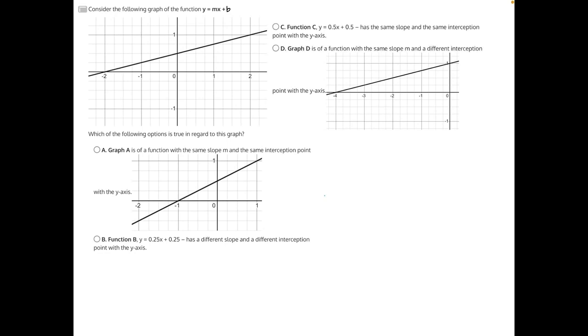Consider the following graph of the function y equals mx plus b. Which of the following options is true in regard to this graph? To solve this question, let's go ahead and find the slope of our original function. And to do that, we'll need to pick two points on the graph.